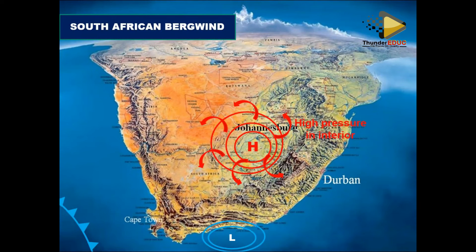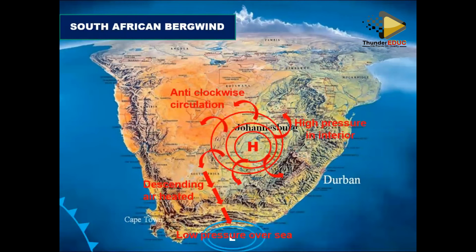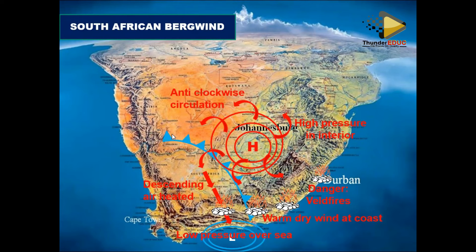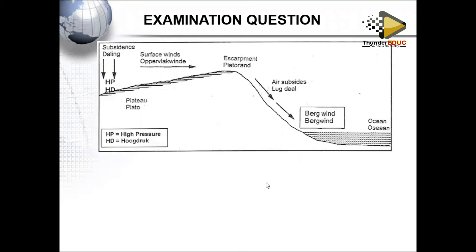To summarize: we have high pressure in the interior and low pressure at the coast. Winds rotate clockwise in the Southern Hemisphere, moving from the interior and descending towards the coastal low, getting heated adiabatically. Warm, dry winds at the coast cause fires. When the cold front approaches South Africa with cold and rainy conditions, it terminates those fires.